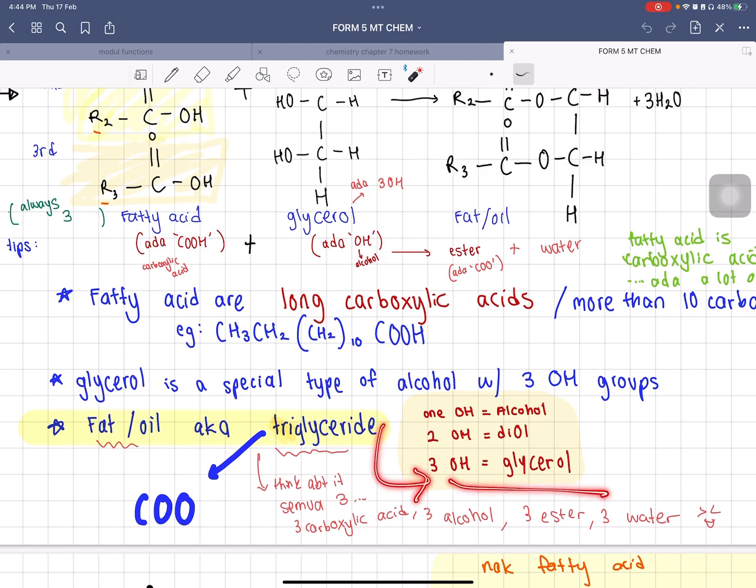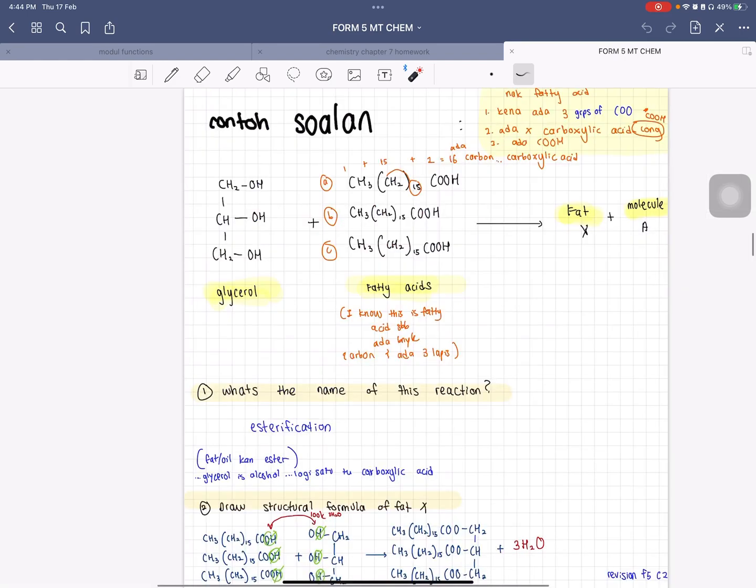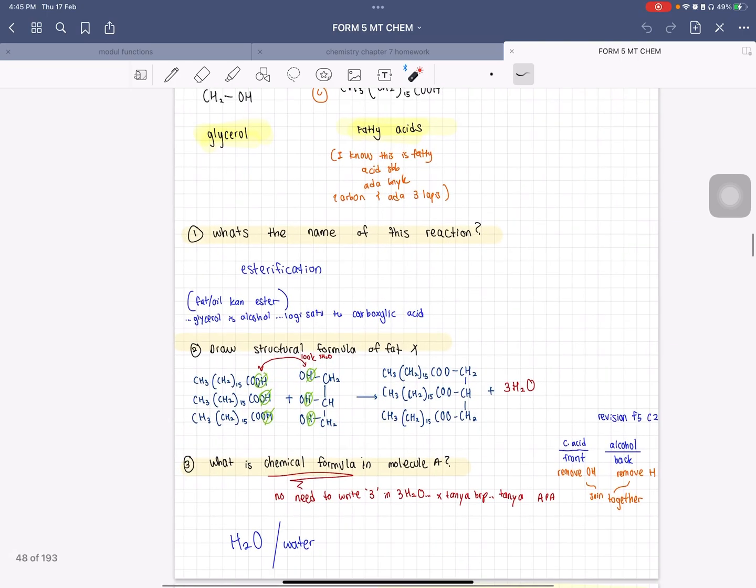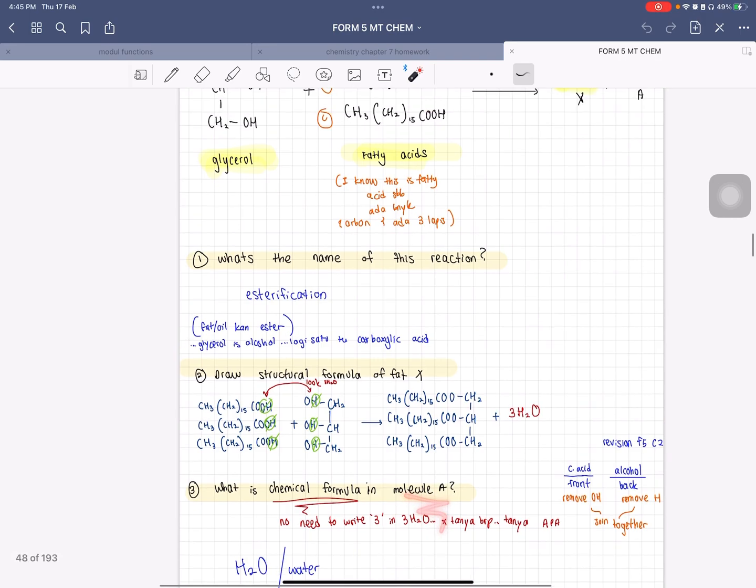Fat or oil is also known as triglycerides. Let's get into an example of a question that can be asked: What is the name of this reaction? If you look closely, it's glycerol and fatty acids, and then you get fats or oil, which is also an ester, and molecule A plus water. Molecule A should just be H2O. What's the name of this reaction? This is esterification. What is the chemical formula of molecule A? As mentioned, molecule A is water, so the chemical formula is H2O.